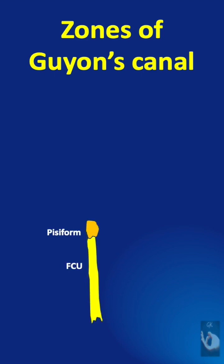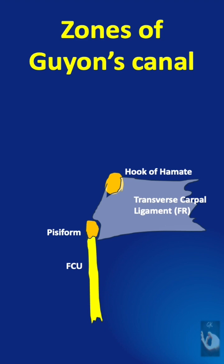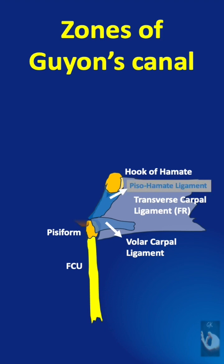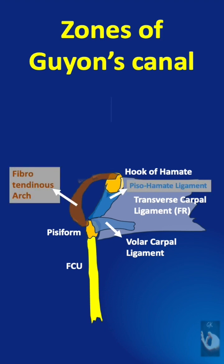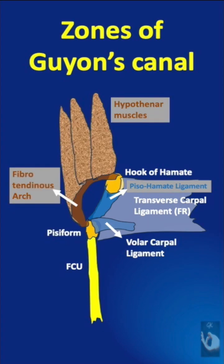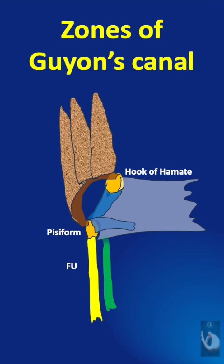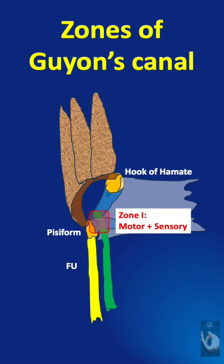Guyon's canal is defined ulnarly by the pisiform, radially by the hamate, dorsally by the transverse carpal ligament or the flexor retinaculum, and volarly by the volar carpal ligament, and more distally the pisohamate ligament and the fibrotendinous arch that is the origin of the hypothenar muscles. As the ulnar nerve enters Guyon's canal, Zone 1 extends from the proximal edge of the volar carpal ligament to the bifurcation of the ulnar nerve. It contains both volar sensory and dorsal motor fibers.